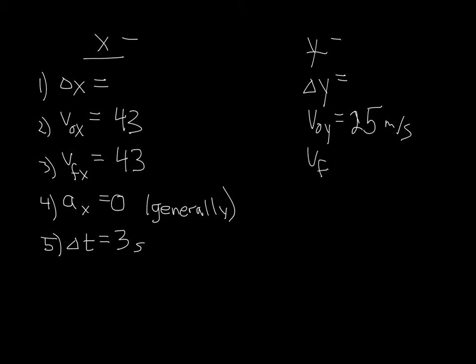V final in the y direction, we don't know what that is. Because in the y direction, we have some acceleration. That acceleration is gravity pulling us down. So that's going to be negative 9.8 meters per second squared, the acceleration due to the gravitational force of earth. And then we have a change in time, also equal to three seconds, because this projectile is in the air for three seconds.